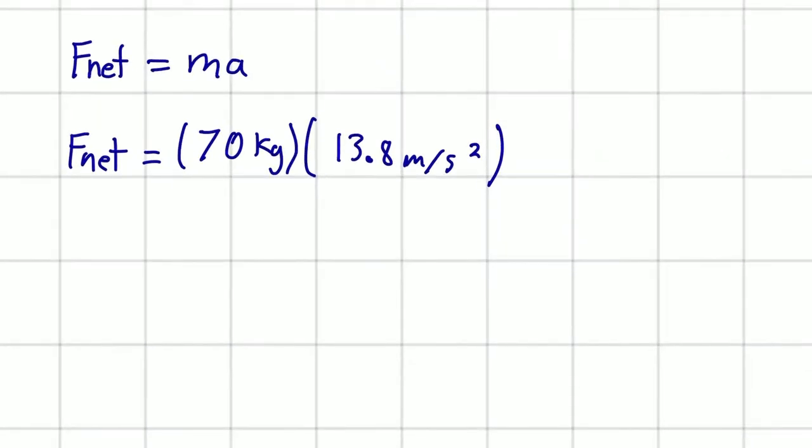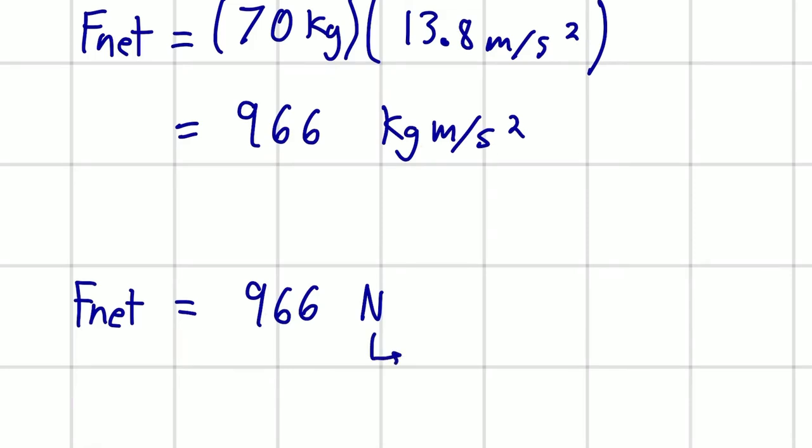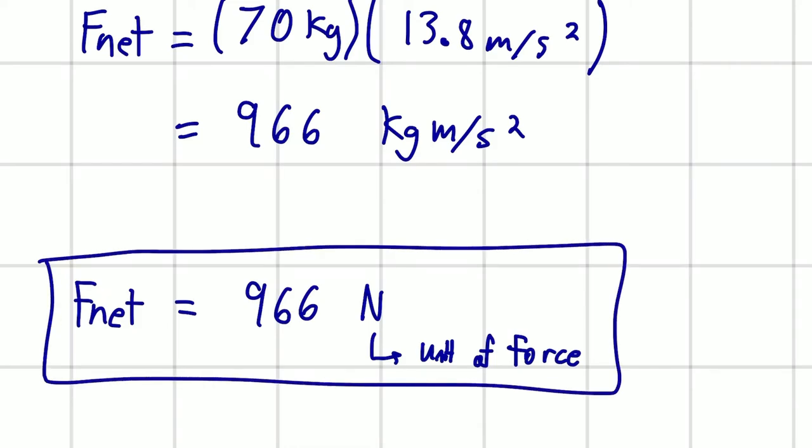Now, all we have to do is type this into our calculator. You should get an answer of 966 kilogram meters per second squared. And it just so happens that kilogram meters per second squared is actually the base units for 1 newton. So that means our F net is 966 newtons. Newtons is a unit of force, whereas kilograms is a unit of mass. So that is our final answer.